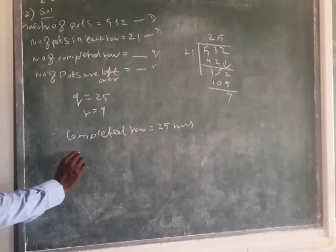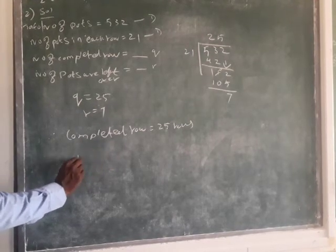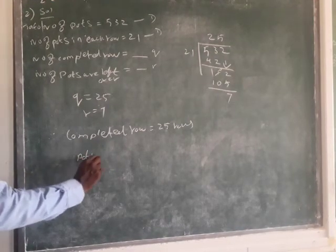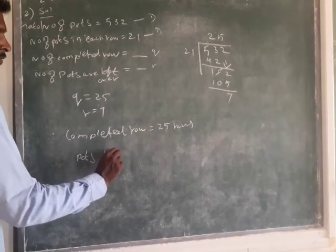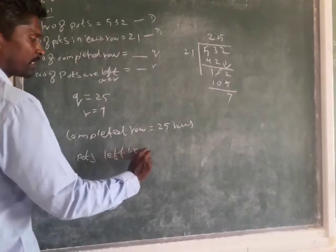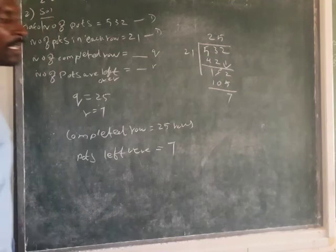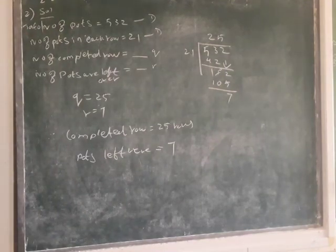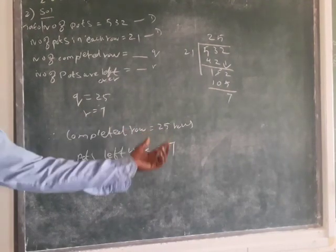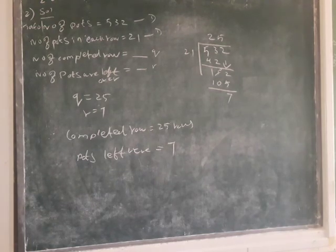The number of remaining or leftover parts: the leftover is seven. After completing 25 rows, the remaining we have is seven flower parts in our hand.